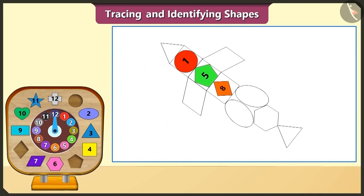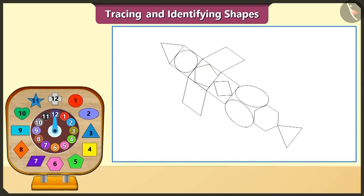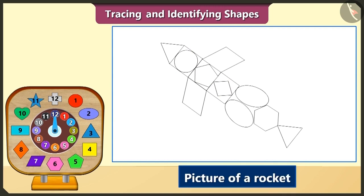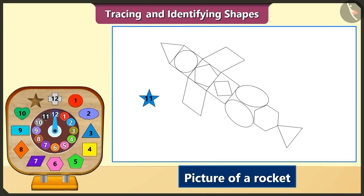Now we will trace these blocks in the three square shapes and trace them. Oh wow! This is a picture of a rocket. If we want to show this rocket flying in the sky, then which shape would we have to trace? To show the rocket flying in the sky, we would have to trace the star shaped block. So now we will trace the star shaped blocks and draw one, two, three, four and five stars.